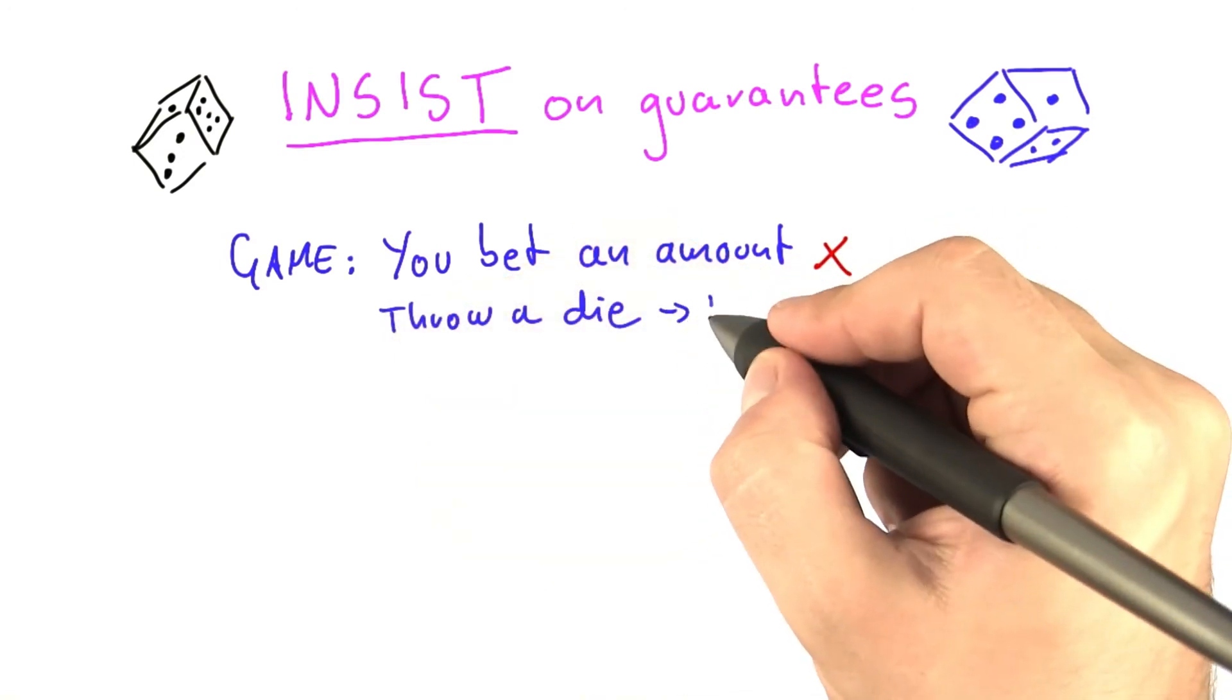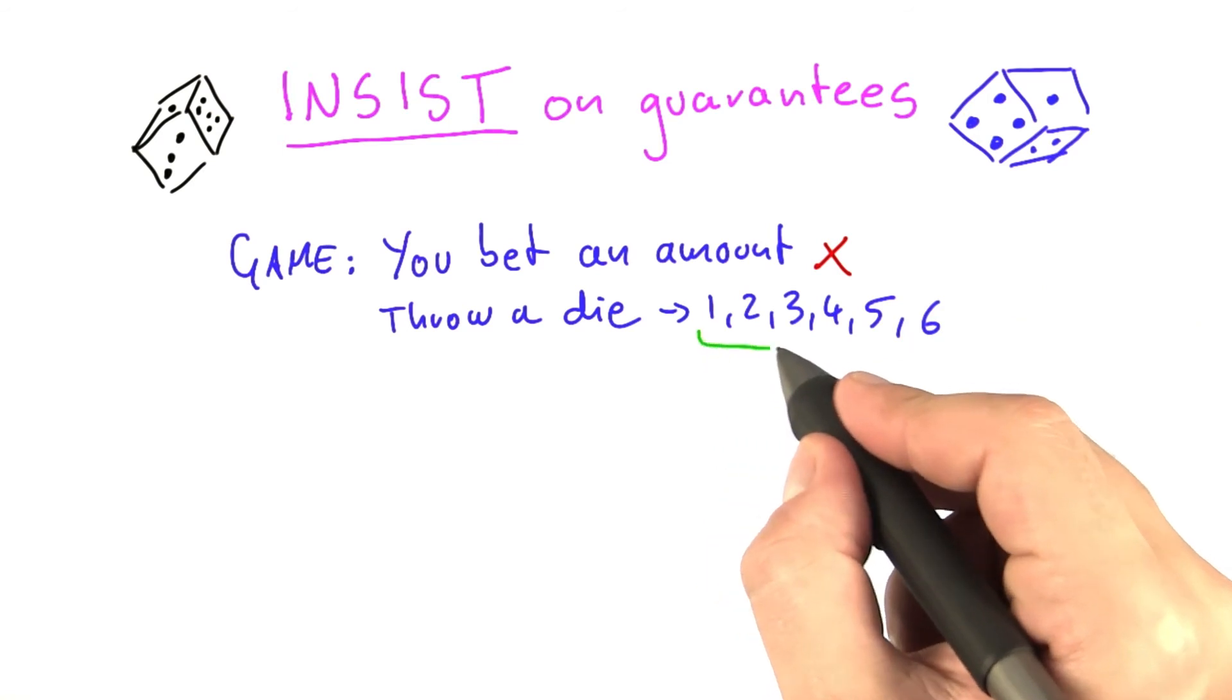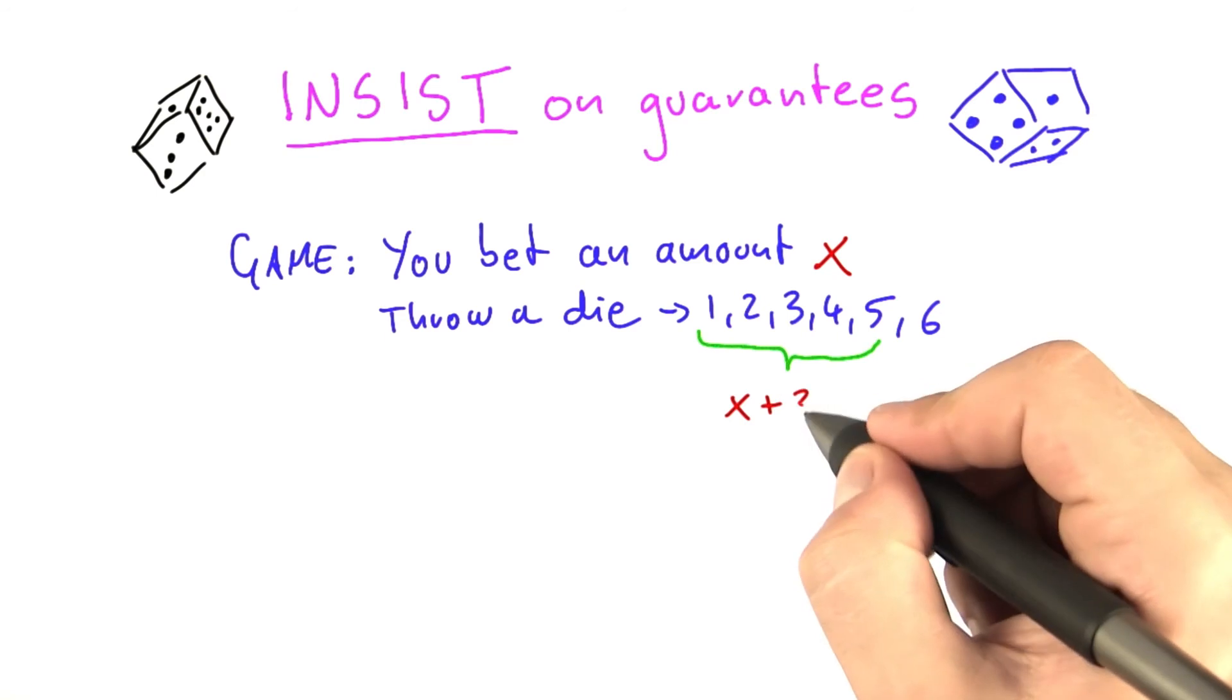And of course the value can be 1, 2, 3, 4, 5, or 6. And if you throw a number between 1 and 5, I will give you back x plus 30% of x.